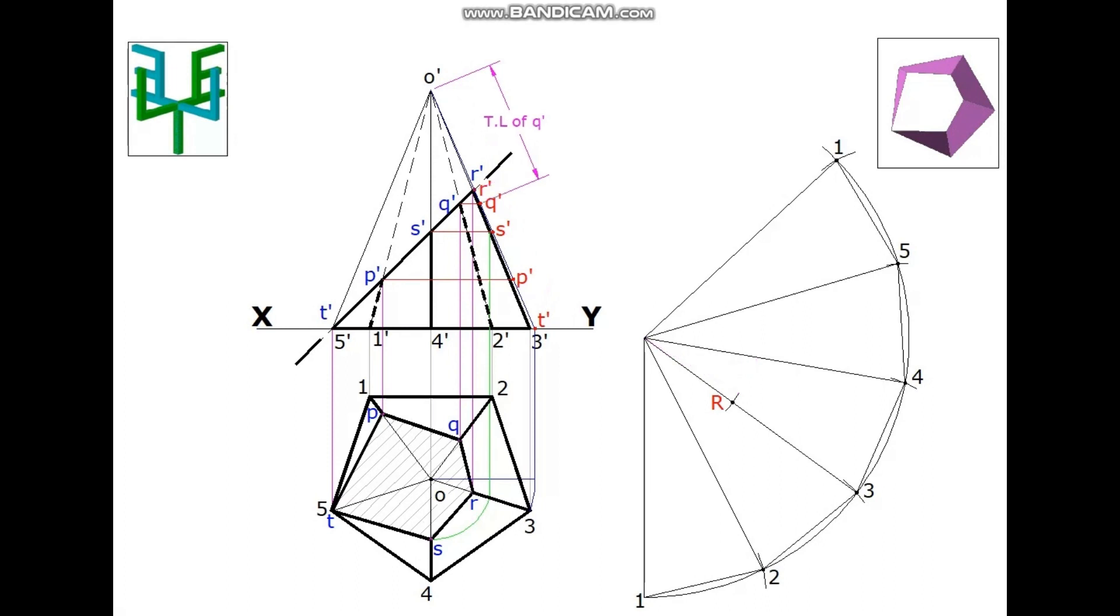Measure the true length of Q', mark it on the slant edge 2 of the development part and name it as Q.